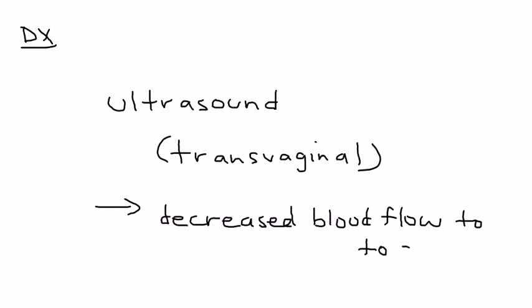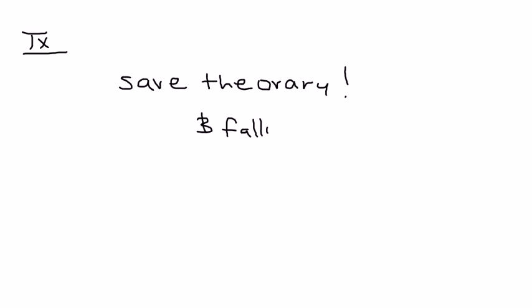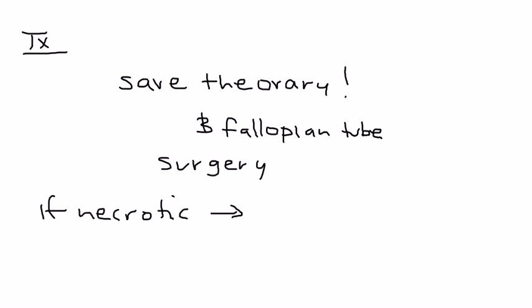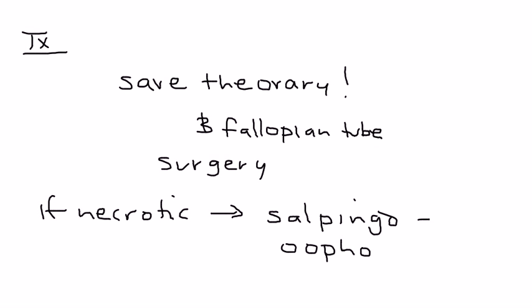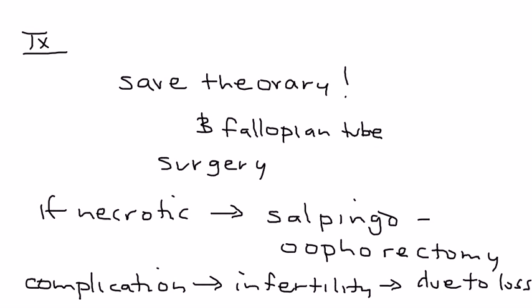In terms of treatment, you have to make sure to save the ovary and also the fallopian tube if it is involved. This is done surgically — you surgically untwist the torsion. Unfortunately, if the tissue is already necrotic due to ischemia, you have to remove the ovary and fallopian tube in a procedure known as salpingo-oophorectomy. An unfortunate complication of this is that it can cause infertility due to the loss of the ovary.